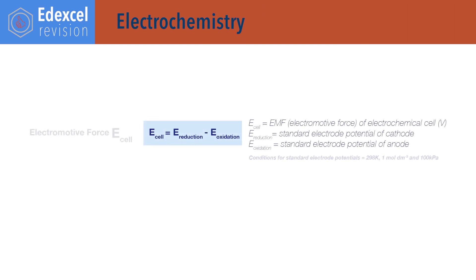For electrochemistry. E-cell equals E-reduction minus E-oxidation, where E-cell is the electromotive force or EMF of an electrochemical cell. E-reduction is the standard electrode potential for the cathode of the cell, and E-oxidation is the standard electrode potential for the anode of the cell. Conditions for standard electrode potentials are 298 kelvin, 1 mole per decimetre cubed concentration, and 100 kilopascals of pressure.